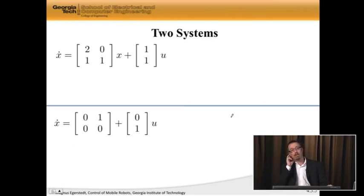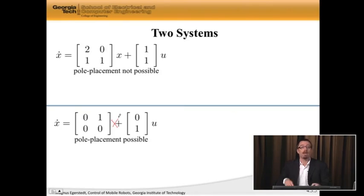So, let's see what happens. Here I have two different systems. 2, 0, 1, 1, x plus 1, 1, u is the first one, and 0, 1, 0, 0, x plus 0, 1. Fine. There should be an x here, by the way. So the lower one is the point mass. The upper one was one where we actually saw that pole placement was not possible. In fact, pole placement is possible for the lower system, and not possible for the upper system. This is, in fact, the system we used when we couldn't do it. Well, let's look at them.